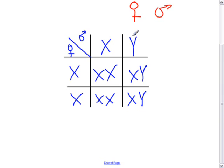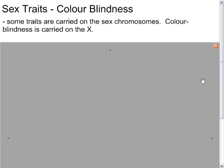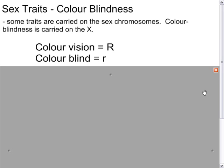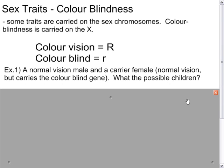Males have a chromosome that females do not — the Y chromosome — and they only have one X chromosome. This leads to some differences in terms of genetic diseases and characteristics. The first characteristic is colorblindness. The X chromosome carries the gene for colorblindness. Normal color vision is denoted with a capital R, and colorblindness is a recessive trait denoted with a lowercase r.